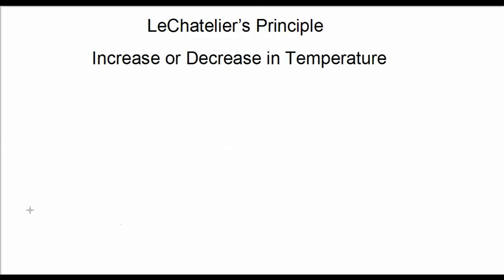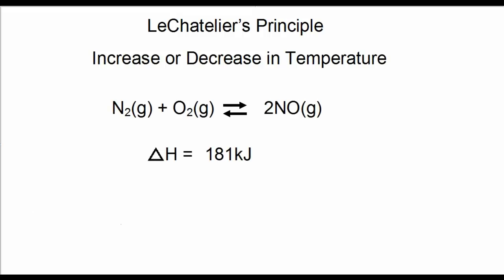So far we've looked at Le Chatelier's Principle where we've been changing the concentrations of either product or reactant. Now we'll consider changing the temperature. Here's a chemical reaction with delta H equal to positive 181 kilojoules. A positive delta H implies an endothermic reaction. One way to help figure out heat transfer in Le Chatelier's Principle is to write the word 'heat' somewhere in the chemical equation. Because this is endothermic, we write the word heat on the left side.